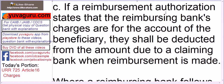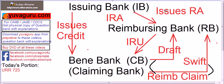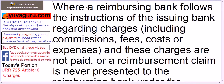Clause C: if the reimbursement authorization states that the reimbursing bank's charges are for the account of the beneficiary's bank (BNI), they shall be deducted from the amount due to the claiming bank when reimbursement is made. This means when the RA given by the issuing bank states charges are to the account of the BNI, the reimbursing bank will deduct its charges first and then pay the remaining amount to the BNI or claiming bank.